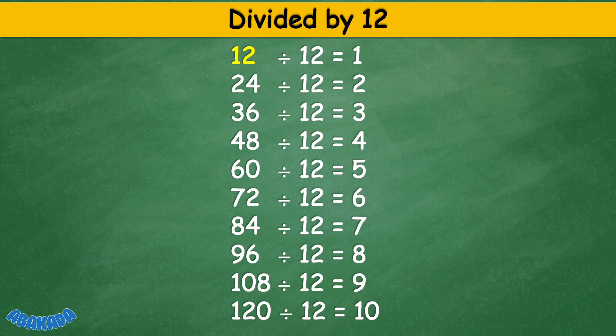Divided by 12. 12 divided by 12 equals 1. 24 divided by 12 equals 2. 36 divided by 12 equals 3. 48 divided by 12 equals 4. 60 divided by 12 equals 5.